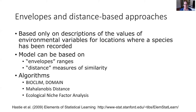A big advantage of envelope and distance-based approaches is that they're based only on descriptions of the environmental variable values for locations where a species has been recorded — they only require presence data and don't use absence, pseudo-absence, or background data. Algorithms include BIOCLIM, one of the original species distribution modeling methods, as well as other distance-based approaches such as Mahalanobis distance and ecological niche factor analysis.